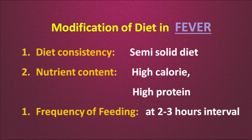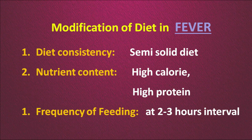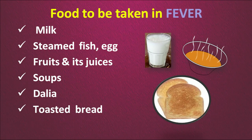Now we will talk about the modification of the diet in case of fever. The diet consistency should be semi-solid. Fever requires high calorie and high protein, because during fever there is a high internal demand for energy and a lot of breaking down of tissues, so high protein is also required. The frequency of feeding can be every 2 to 3 hours in small quantities. Foods that can be given include milk, steamed fish, egg, fruits and fruit juices (not chilled), hot soups, dahlia and toasted bread.